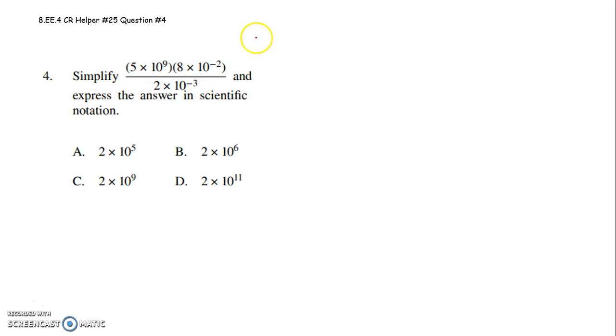So the first thing I'm going to do is simplify the numerator. So I have 5 times 10 to the 9th multiplied by 8 times 10 to the negative 2nd. I'm just going to leave the denominator for now, 2 times 10 to the negative 3.